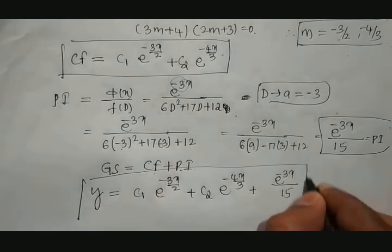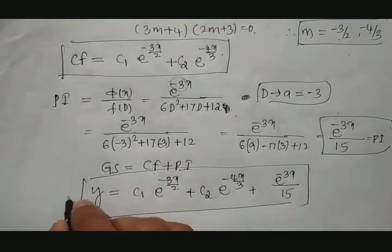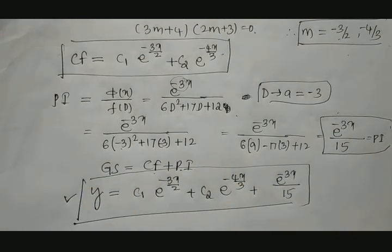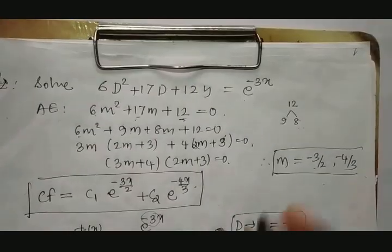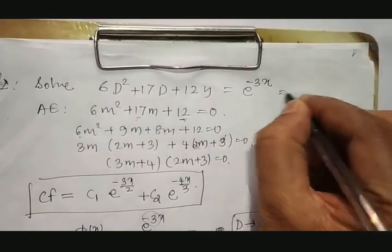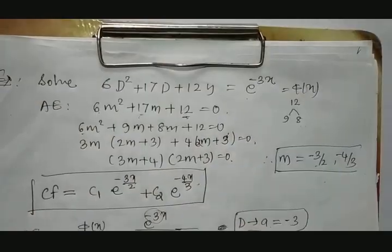Therefore, the general solution is y = CF + PI = C₁·e^(−3x/2) + C₂·e^(−4x/3) + e^(−3x)/15. This is the general solution of the given example where an exponential is given as the value of the right-hand side function. Thank you.